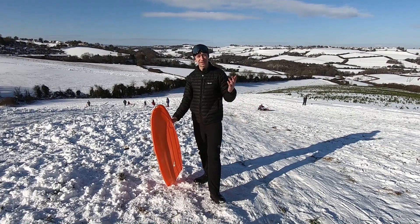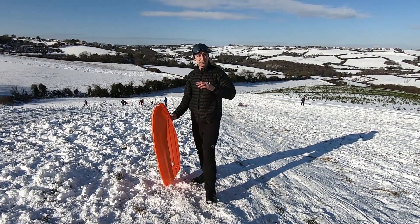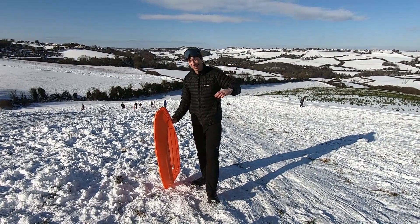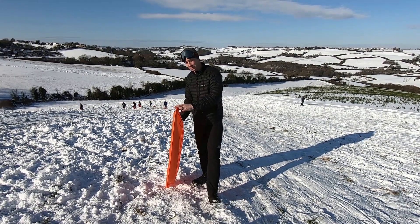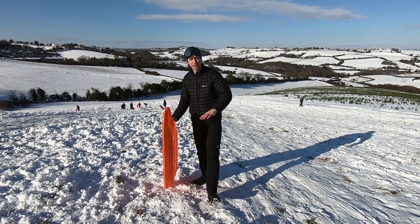Okay, so this question is about the sledger going down the hill. We're going to assume they start at a height of 20 meters and we're also going to assume that there's no friction between the sledge and the ground.